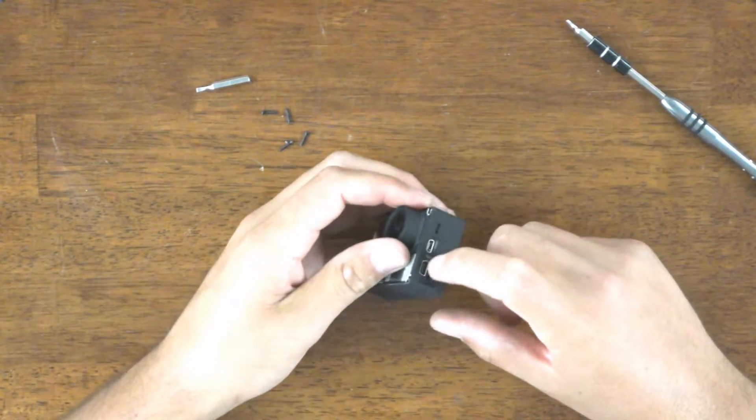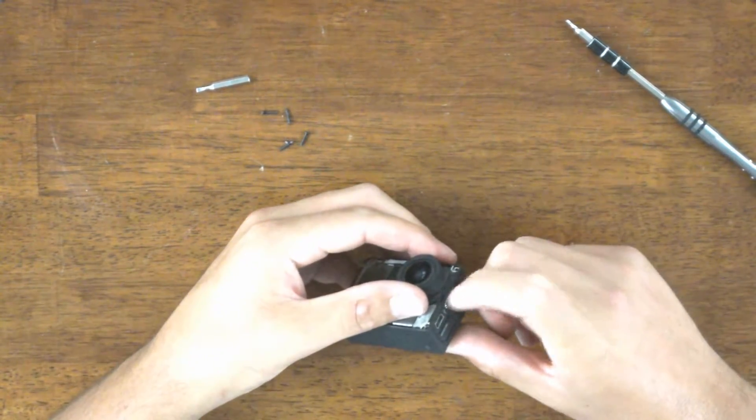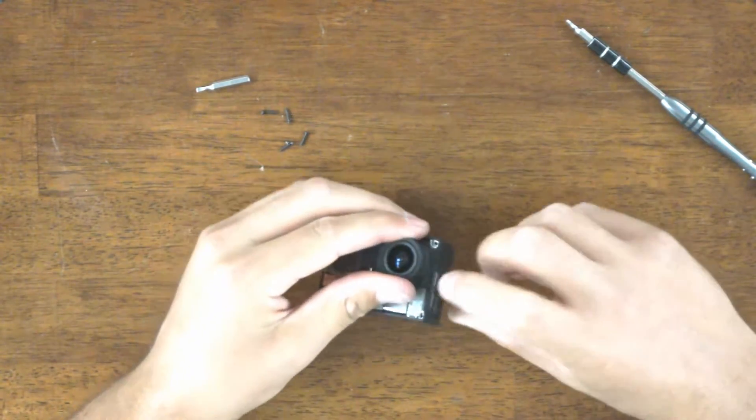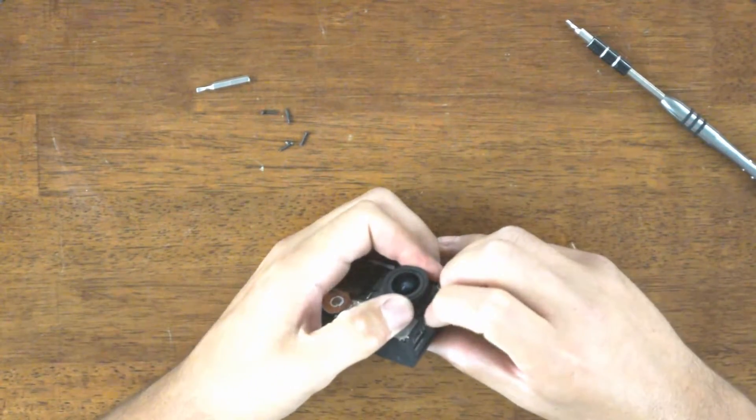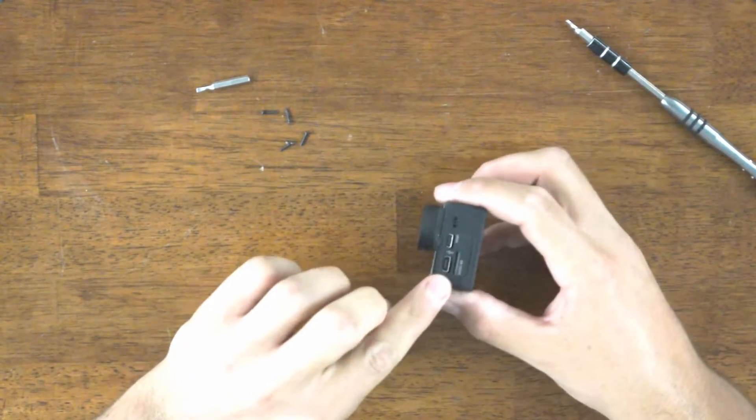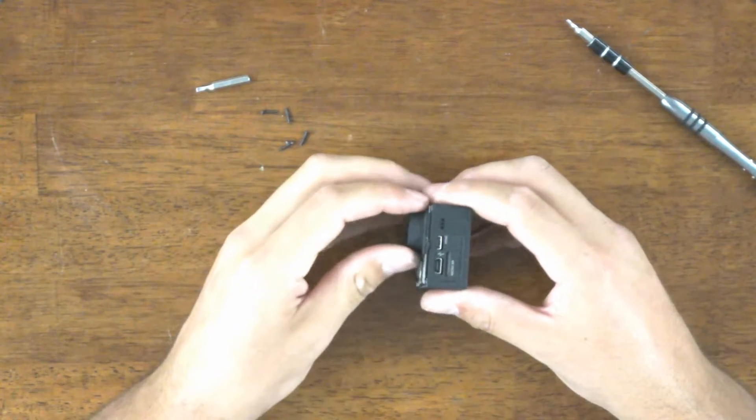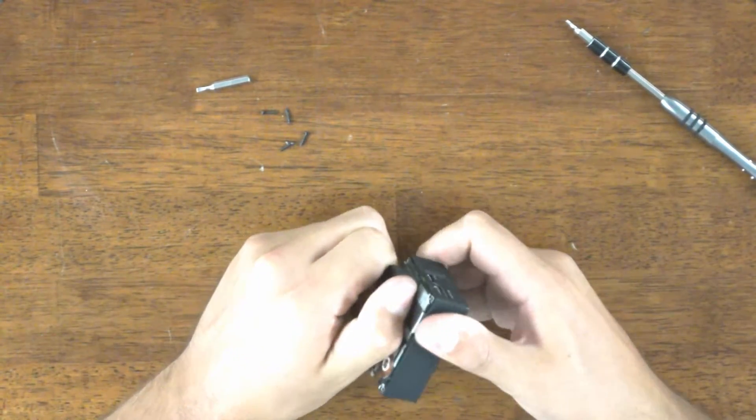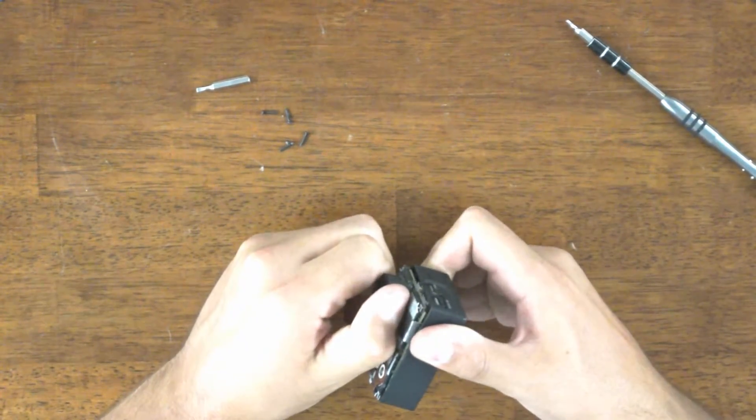Next, we're going to pry the ports off of the side plate here. So you want to use your fingernail or another flat object and put it in the hole here. Pull it away while pulling the main part of the body. Once you see the ports go up a little bit, you're good, you're clear. Just wiggle it back and forth.